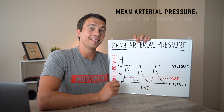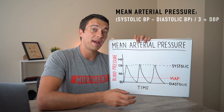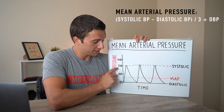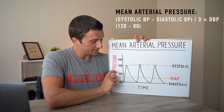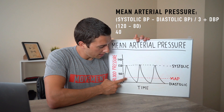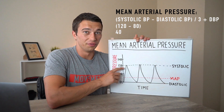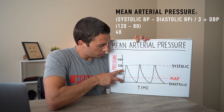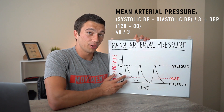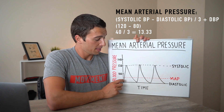The equation for mean arterial pressure is: MAP = (systolic minus diastolic) divided by 3, plus diastolic. With a systolic of 120 and diastolic of 80, we get 120 minus 80 equals 40. The mean arterial pressure sits one-third of the way up from the bottom to the top. Taking one-third of 40: 0.33 times 40 equals approximately 13.33.